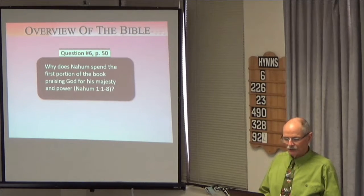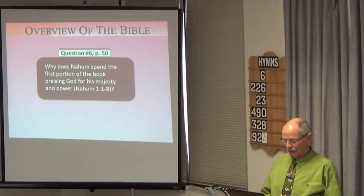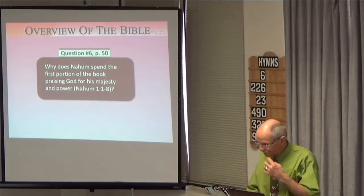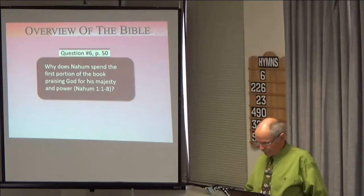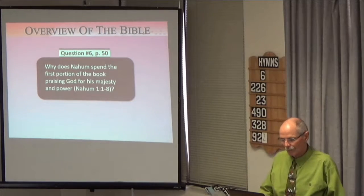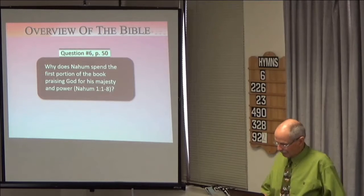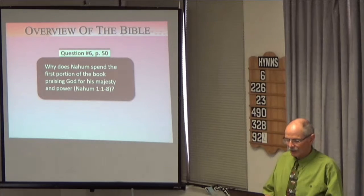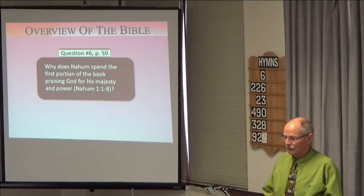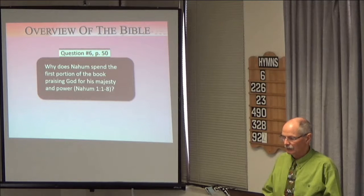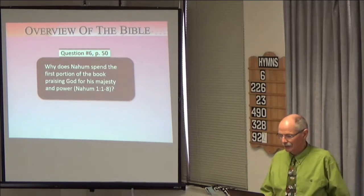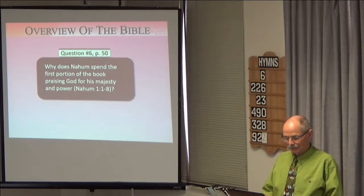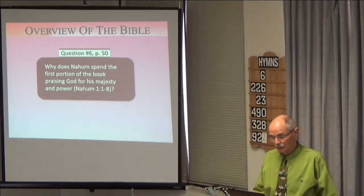And now then, if there's no other thoughts, we'll go on to verse four. At least, do you want to read verse four, please? Of Nahum chapter one? He rebukes the sea and makes it dry and dries up all the rivers. Bashan and Carmel wither and the flower of Lebanon wilts. Okay. Now here, what is God, what is it telling us that God is able to do?